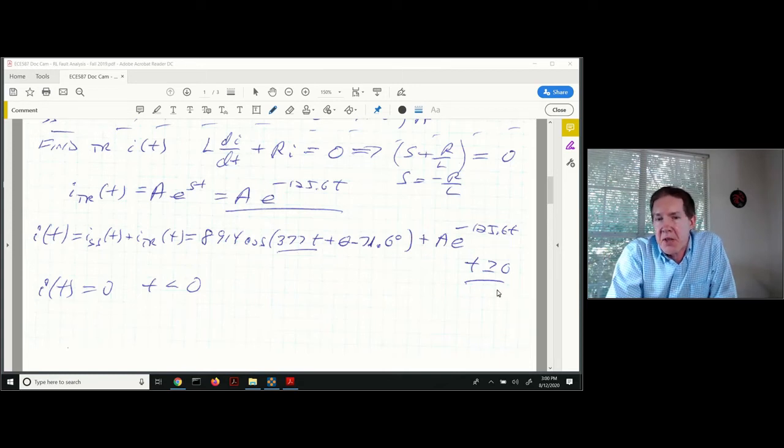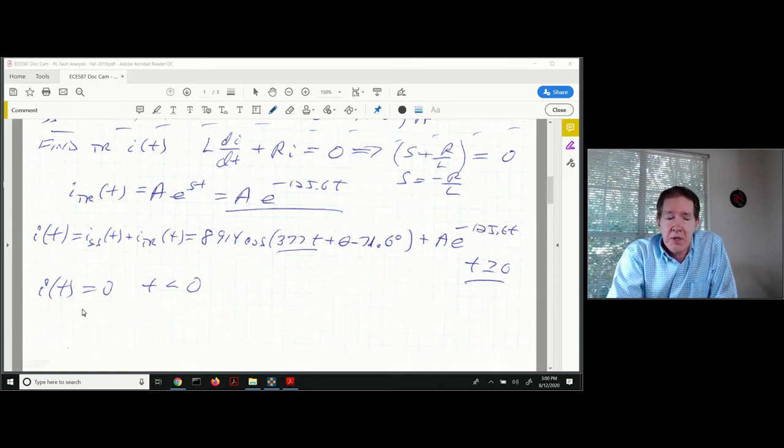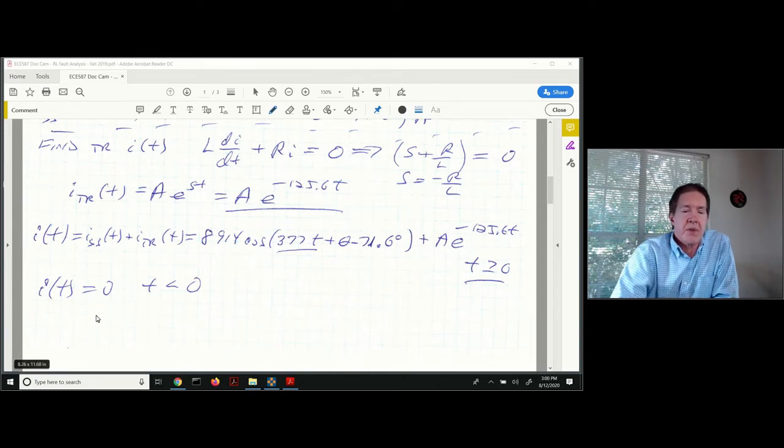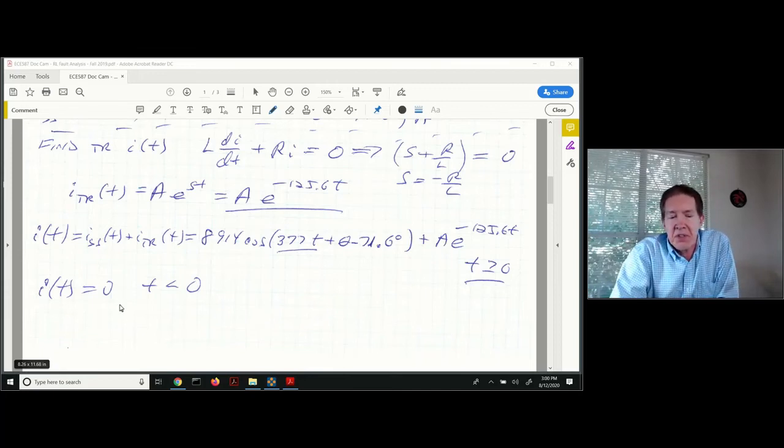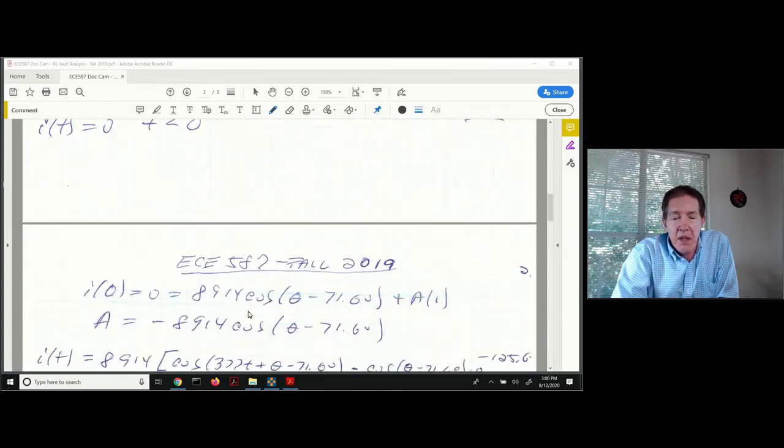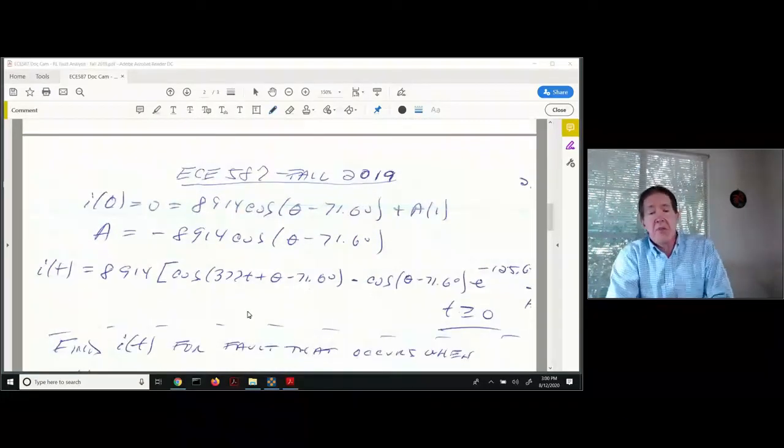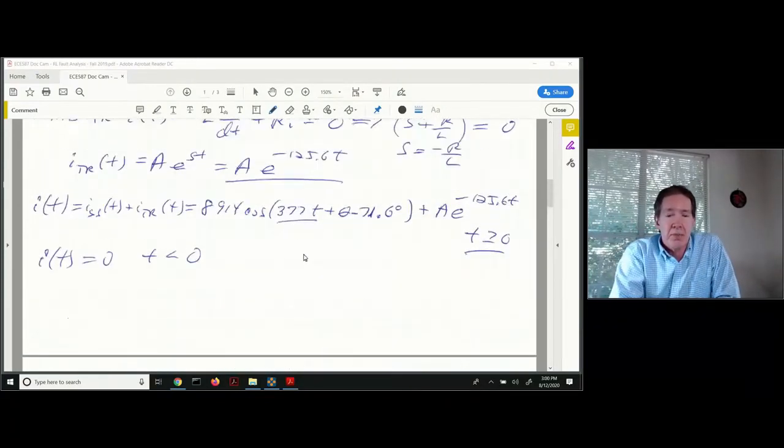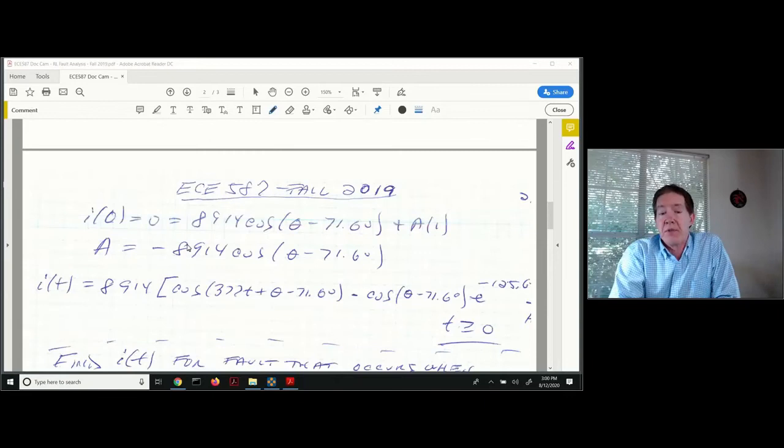Next we apply the boundary condition. There's no load in this circuit, so that boundary condition is zero current before the fault occurs, right after the fault occurs. Current going through the inductor cannot change instantaneously, so it equals zero at time equal to zero. That's going to be the boundary condition. I can apply this to the total solution at time equal to zero.